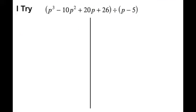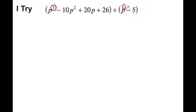This next one gets more confusing. We're dealing with a cubic, and the biggest power of x in the dividend is 3 while the biggest power of x in the divisor is 1. If you take the biggest power in the dividend and subtract the biggest power in the divisor, that tells you the biggest power of x in the quotient — and that helps you think about the box.